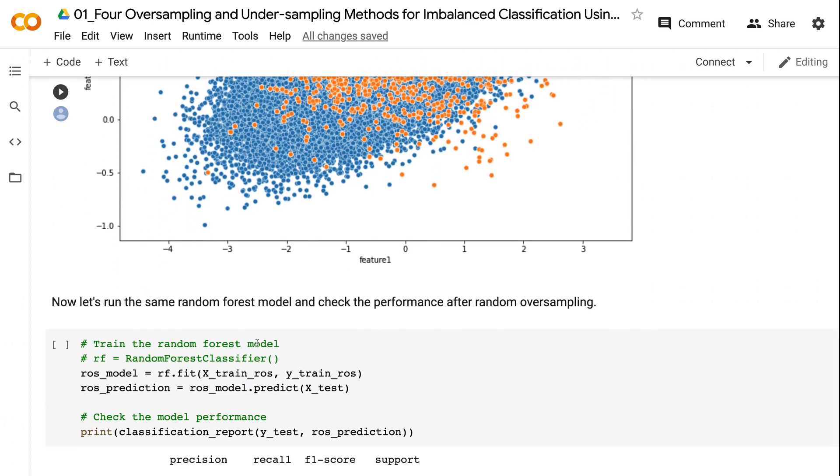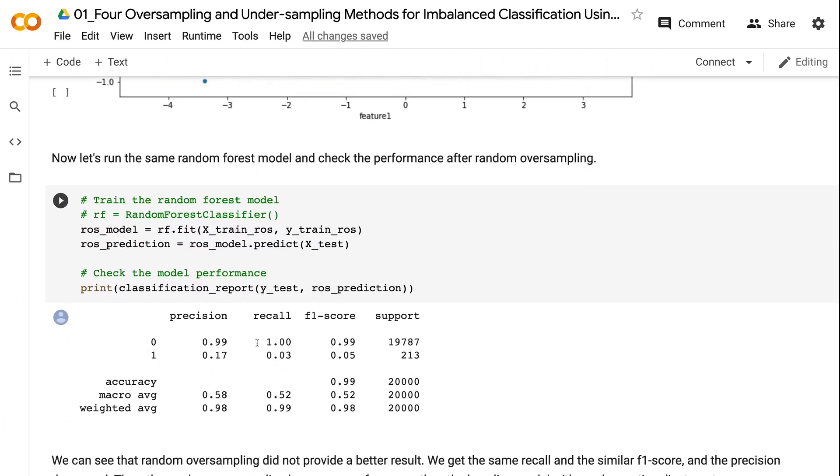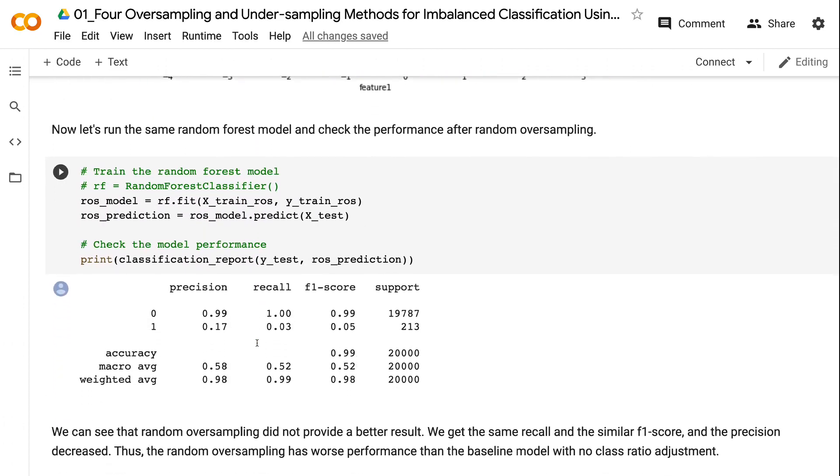Now let's run the same random forest model and check the performance after random oversampling. We can see that random oversampling did not provide a better result. We get the same recall and similar F1 score, and the precision decreased. Thus, the random oversampling has worse performance than the baseline model with no class ratio adjustment.